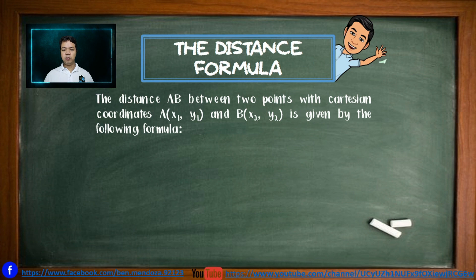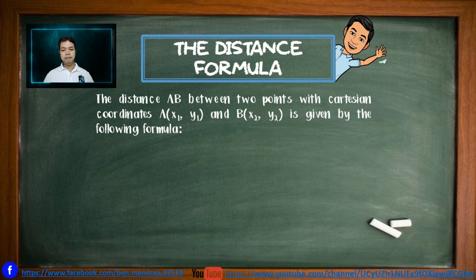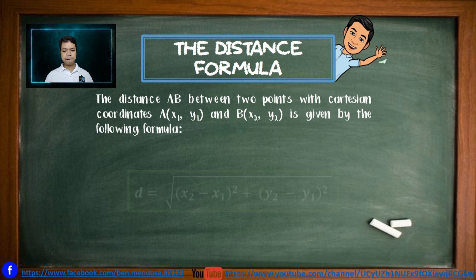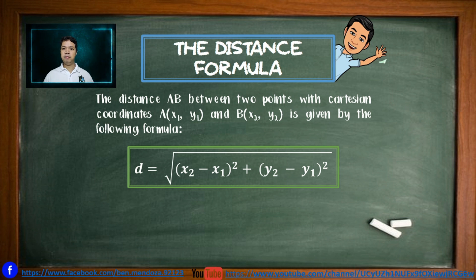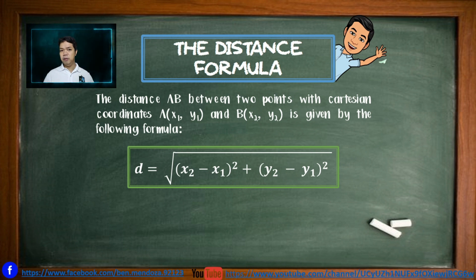The distance AB between two points with Cartesian coordinates A (x₁, y₁) and B (x₂, y₂) is given by the following formula: the distance is equal to the square root of (x₂ minus x₁) squared plus (y₂ minus y₁) squared. This formula came from the Pythagorean theorem in a right triangle.